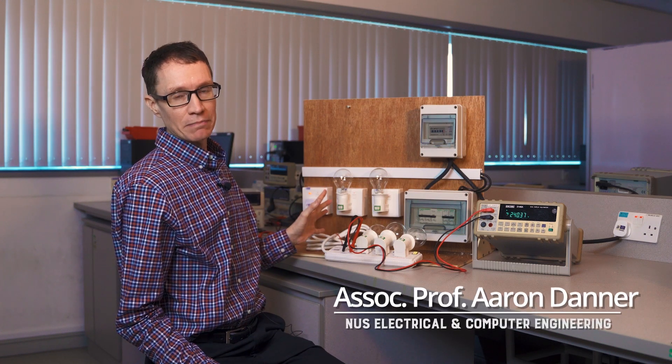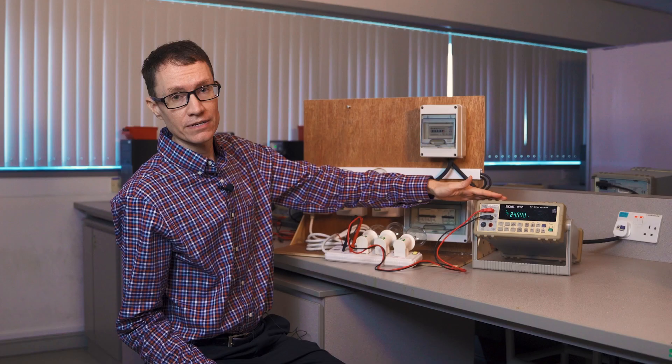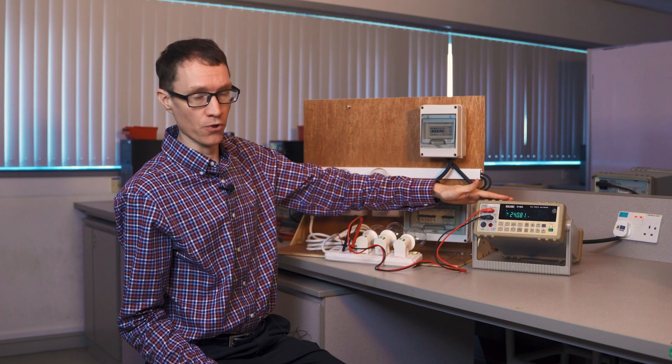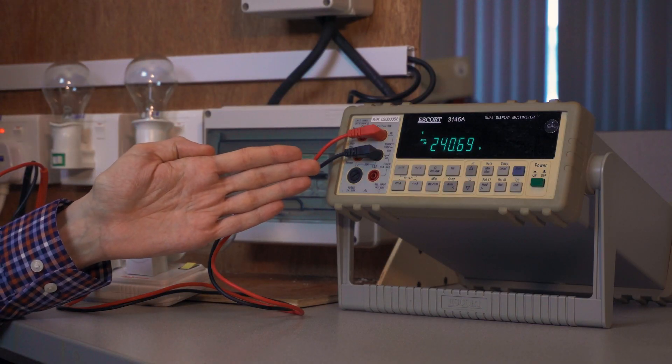I have five light bulbs here behind me. They're all wired up in parallel and plugged into the wall. Simultaneously I have a multimeter here set to measure AC volts. So what we're really seeing is the RMS voltage of our grid.